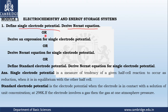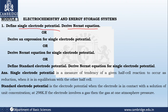Standard electrode potential is a slight modification of single electrode potential. It is the electrode potential when the electrode is in contact with a solution of unit concentration at 298 Kelvin. If the electrode involves a gas, then the gas is at one atmospheric pressure — that sentence is applicable for the standard hydrogen electrode. For most electrodes in contact with solution only, you can stop the definition at 298 Kelvin.